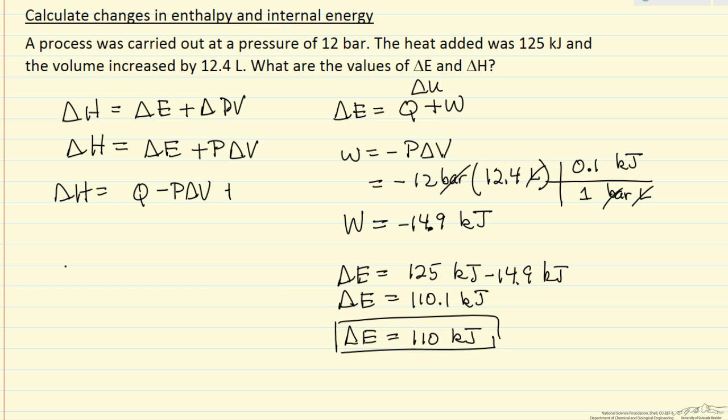And then we have this second term. So we can see that for this constant pressure process, delta H is just equal to Q, and that's 125 kilojoules.